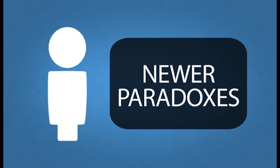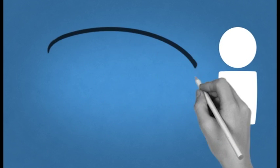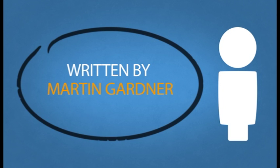The boy and girl paradox is one of the newer paradoxes in this series, dating back to 1959. It was written by Martin Gardner and is also known as the two children problem.